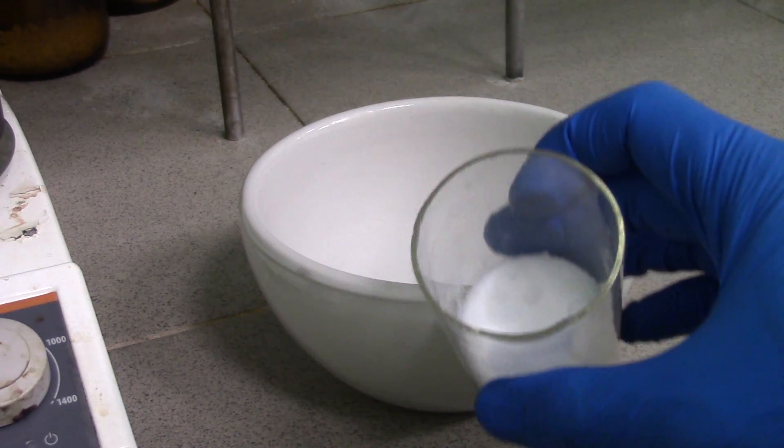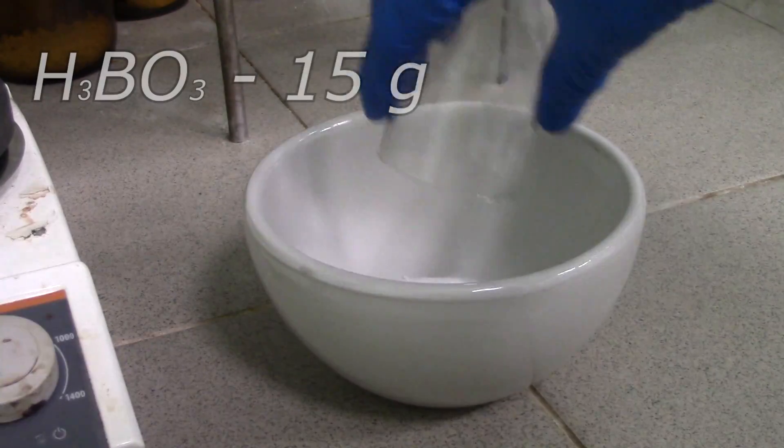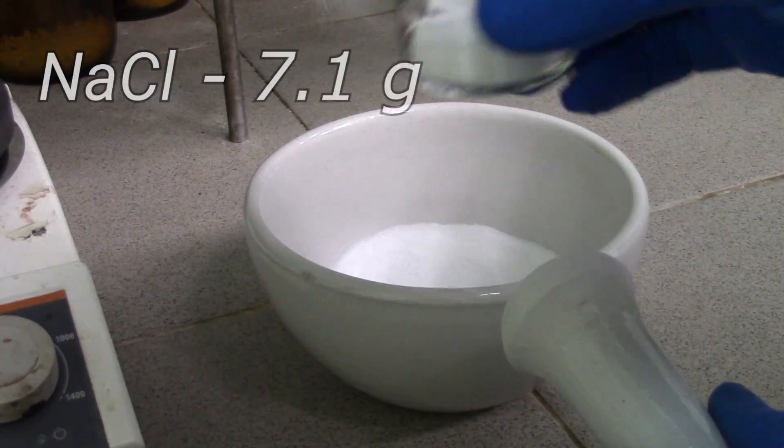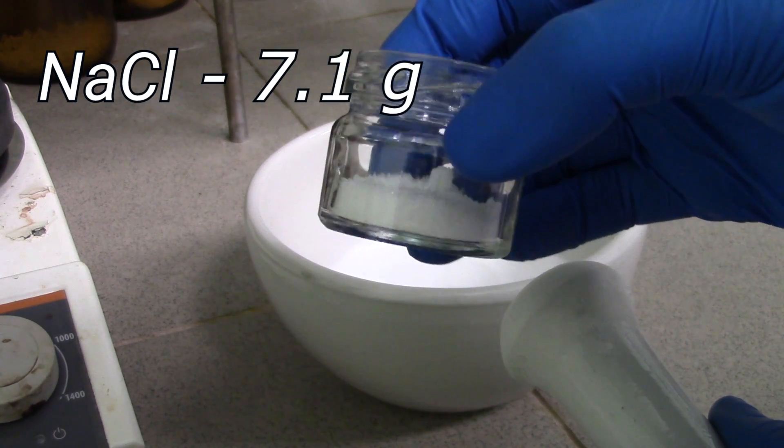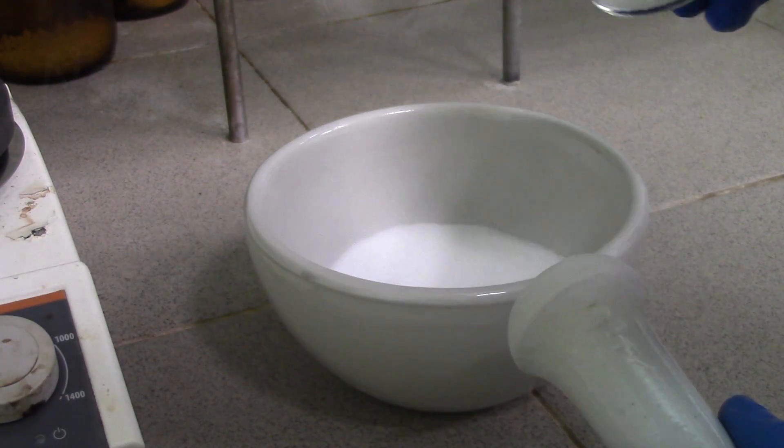For today's experiment, I put in water 15 grams of boric acid and 7.1 grams of table salt, then grind it into fine powder.